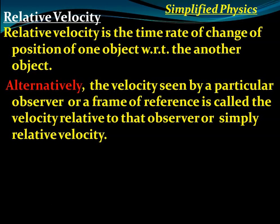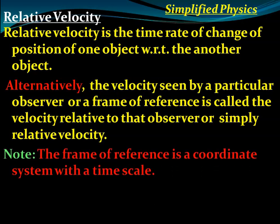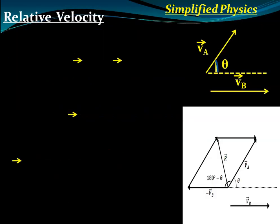So we can say that the velocity seen by a particular observer or frame of reference is called the relative velocity. The frame of reference is simply the coordinate system with a time scale for an observer.